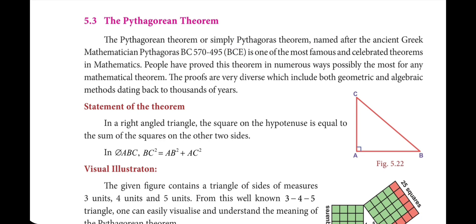The Pythagorean theorem is named after the ancient Greek mathematician Pythagoras, who lived approximately 572–495 BC. It is one of the most famous and celebrated theorems in mathematics. The proofs are very diverse, including both geometric and algebraic methods dating back thousands of years, and it has been used by mathematicians to develop many other theorems.